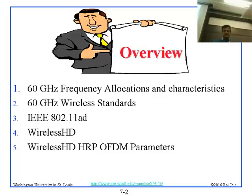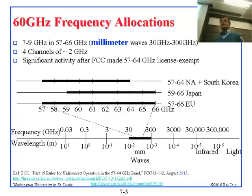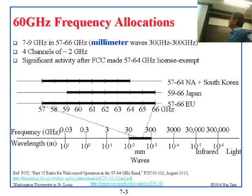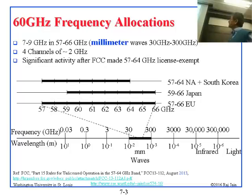So, 60 gigahertz frequency allocation. If you remember the spectrum, there is a 60 gigahertz frequency band. In North America, the FCC gave 57 to 64 GHz. Korea gave the same thing. In Japan, they gave 59 to 66. And in the EU, they gave from 57 to 66.